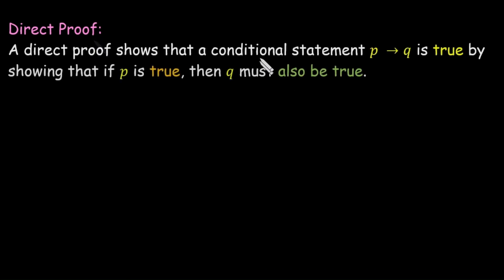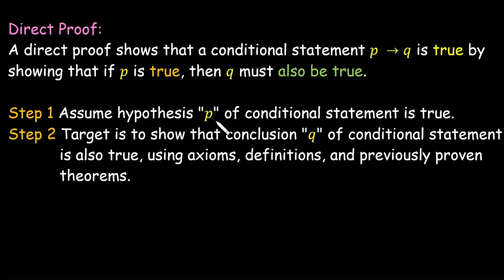Moving towards the first type of proof — direct proof. Direct proof is used to show that the conditional statement p implies q is true. In this proof, we assume that p is true and then show that q must also be true. We start from the hypothesis of the conditional statement, assume it is true, and then our target is to show that the conclusion q is also true, either with the help of axioms, definitions, or previously proven theorems. Direct proofs are quite straightforward proofs.